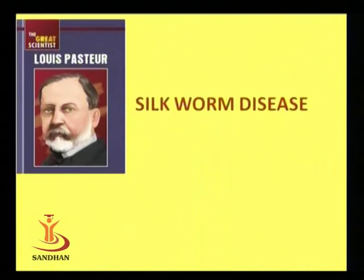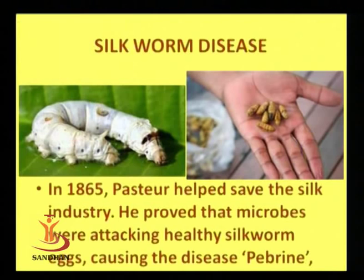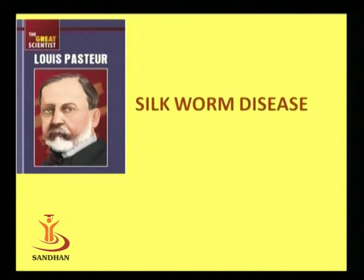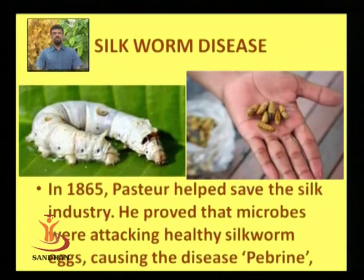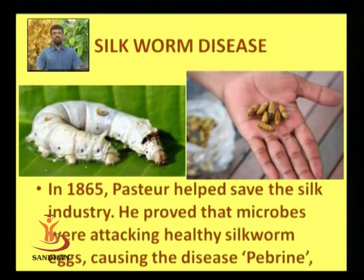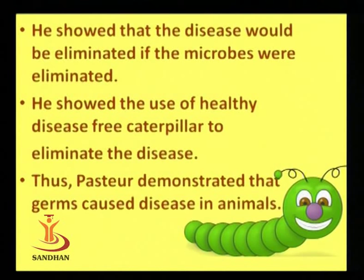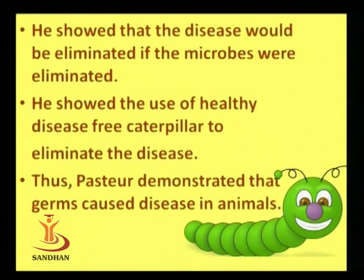Pasteur was given the opportunity to study silkworm disease. In 1865 he helped save the silk industry by proving that microbes were attacking healthy silkworm eggs, causing the disease febrine. He showed that the disease would be eliminated if the microbes were eliminated, demonstrating that using healthy, disease-free caterpillars could eliminate the disease and thereby improve the product.